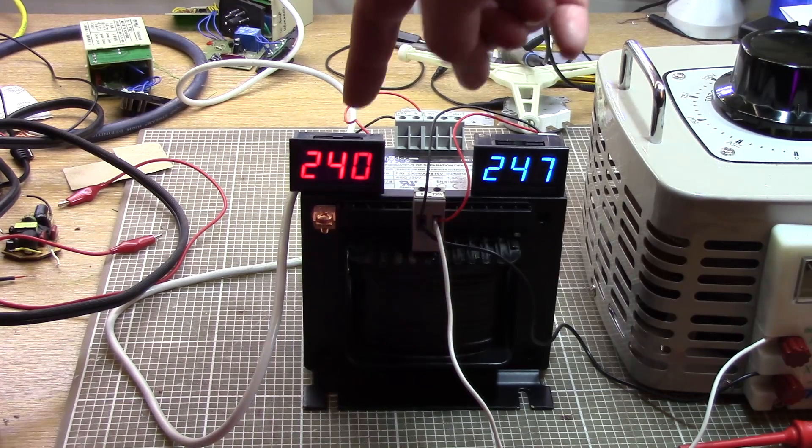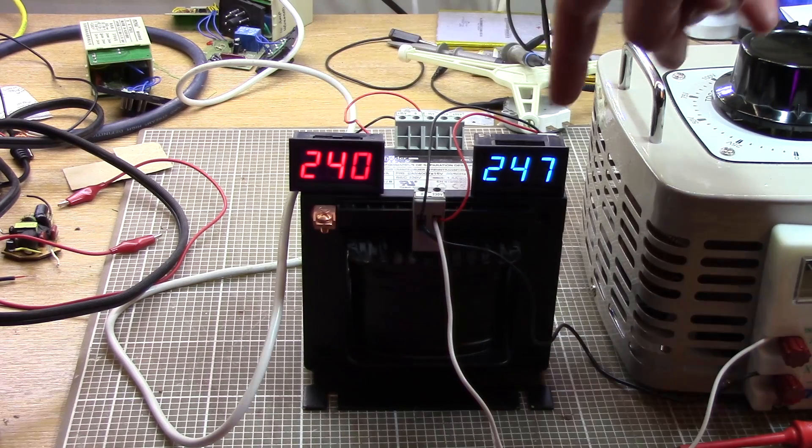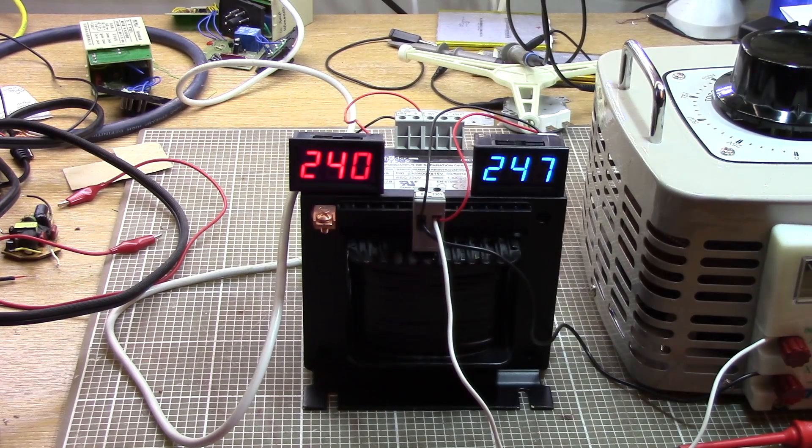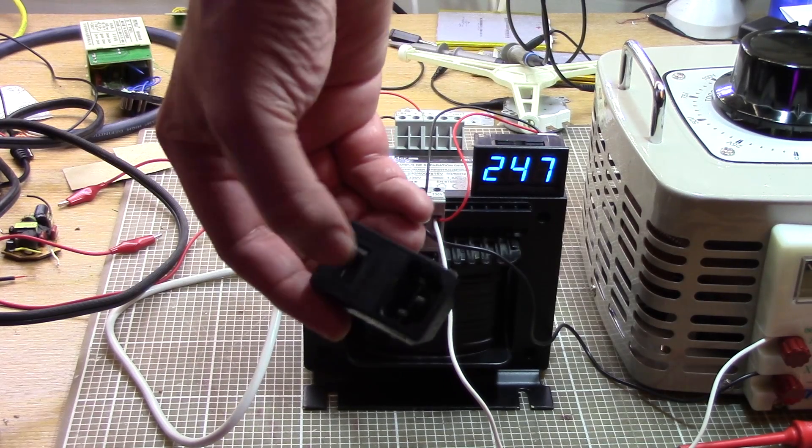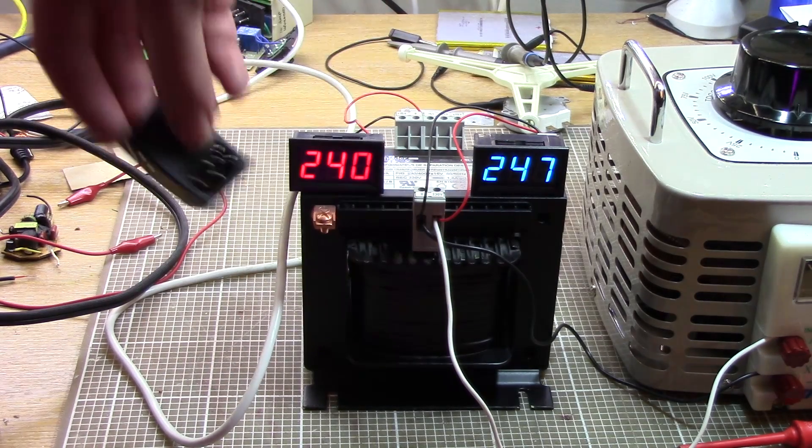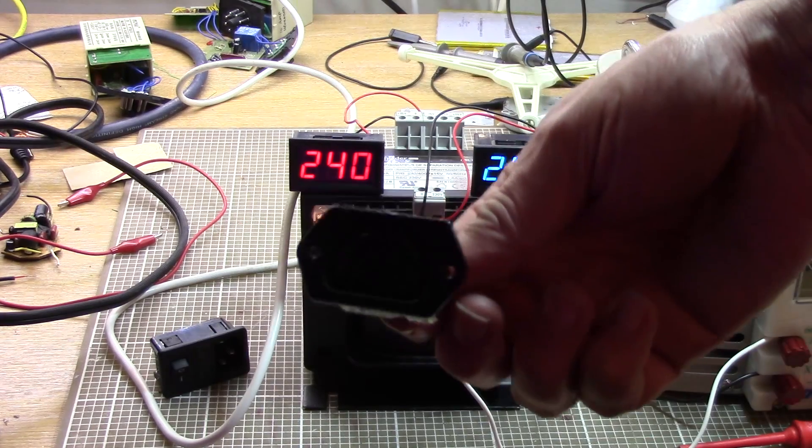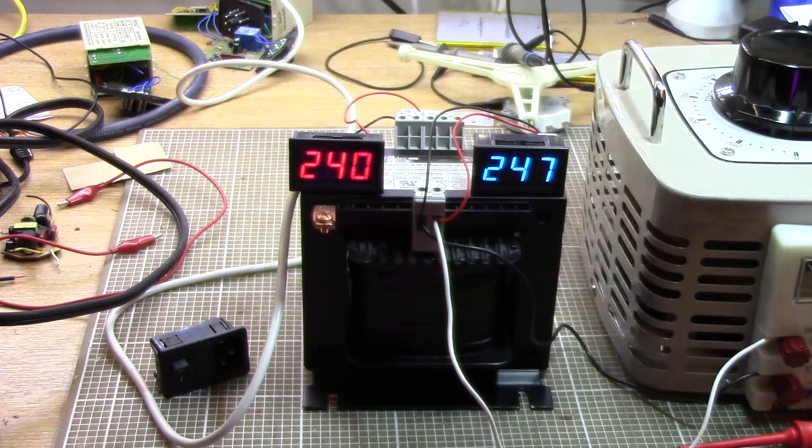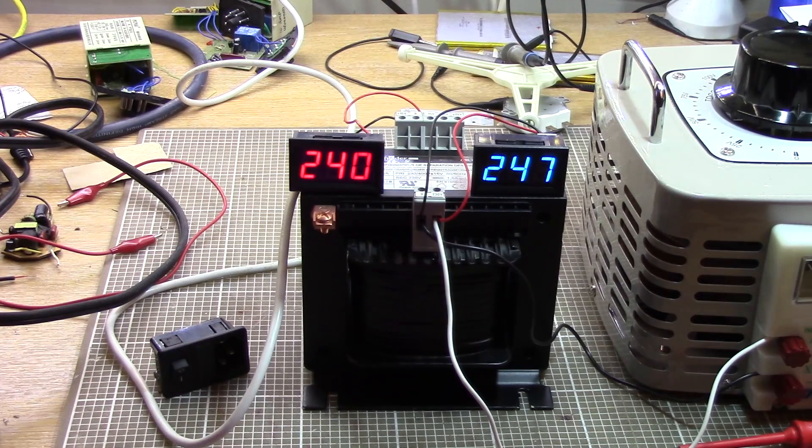So I picked up a couple of these cheap panel meters off eBay. This one's measuring the input voltage from the mains, this is what's coming out of the transformer. And I figured if I combined them with the switched IEC socket that I scavenged off something out of the garage, and this IEC outlet socket that I scavenged off an old PC power supply, all I need then is a container to hold it all in.